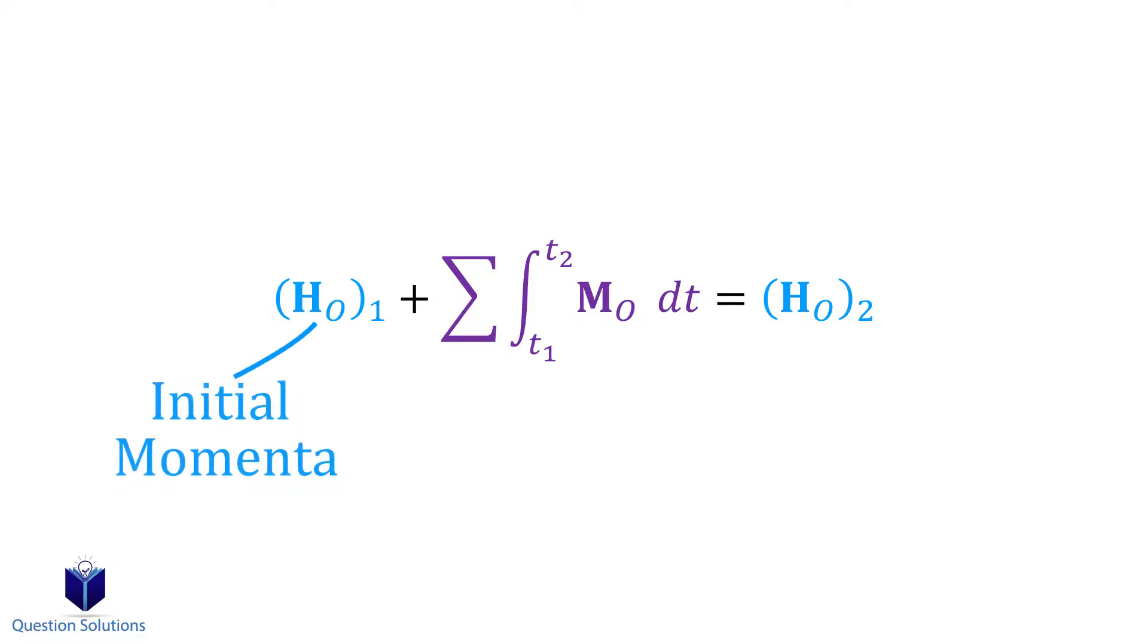The first term is called the initial momenta, the second term is called the angular impulse, and the last term is called the final momenta. It doesn't mean a lot like this, so let's break down each term so we know what they mean.